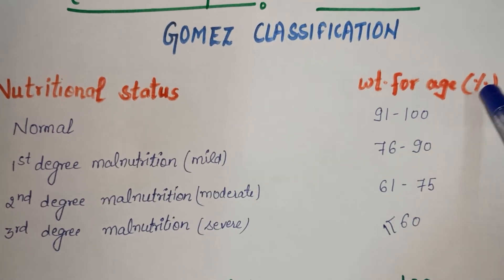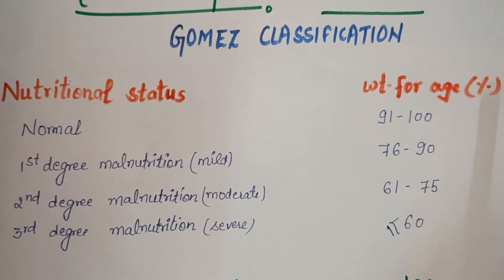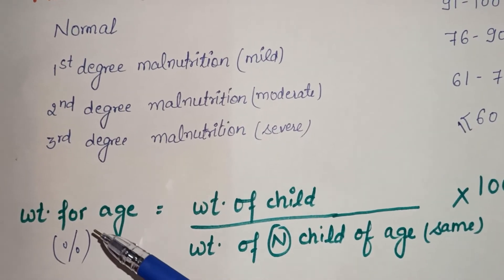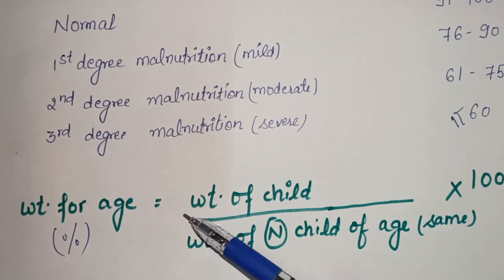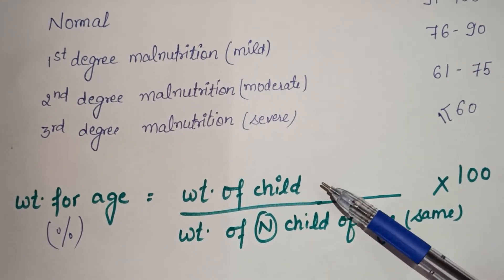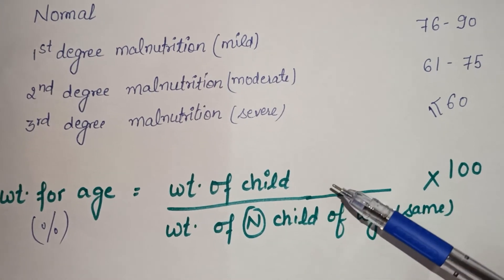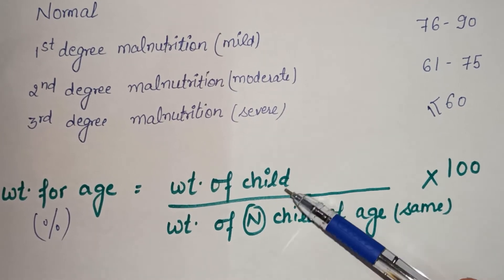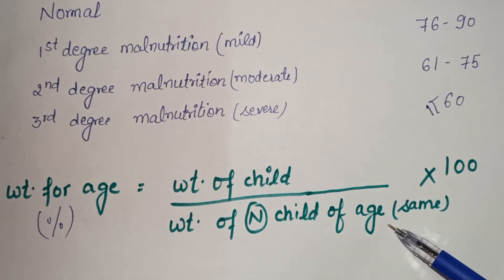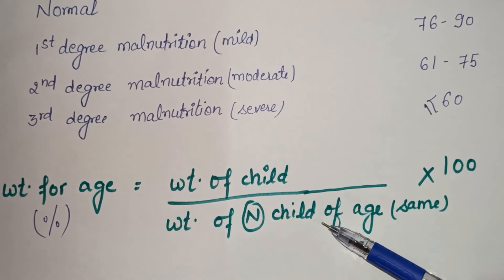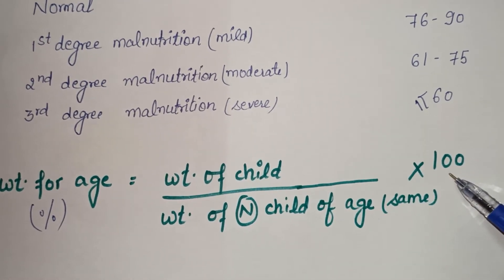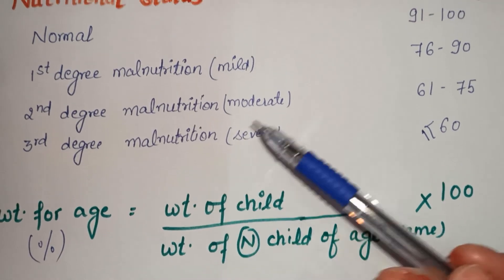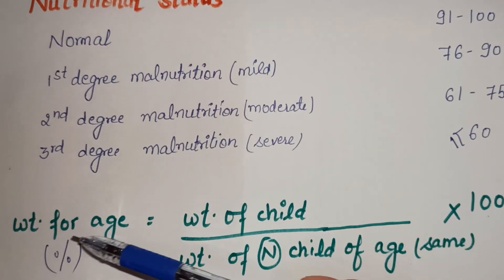Now we will see how to calculate weight-for-age percentage. The formula is: weight-for-age percentage equals the weight of the child divided by the weight of a normal child of the same age, multiplied by 100. We then classify which category the child falls into according to this percentage.